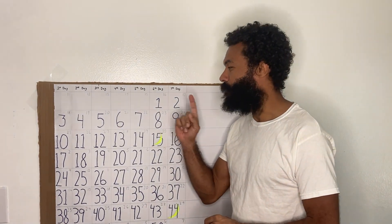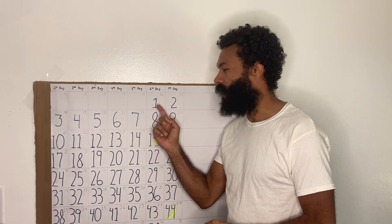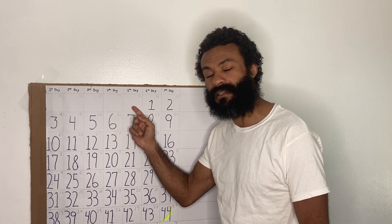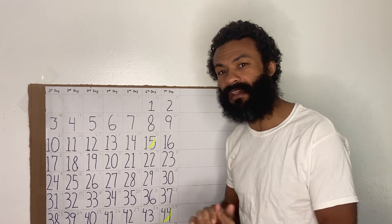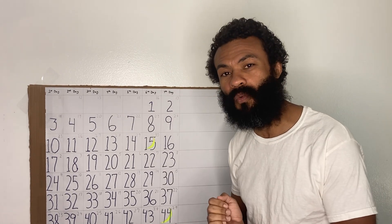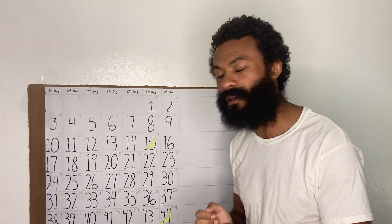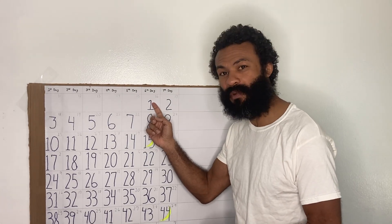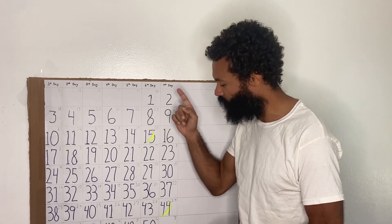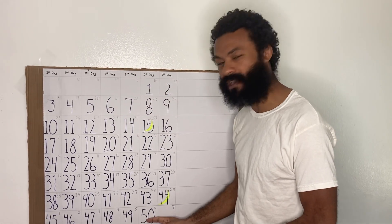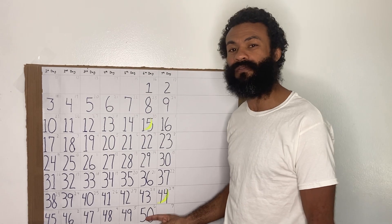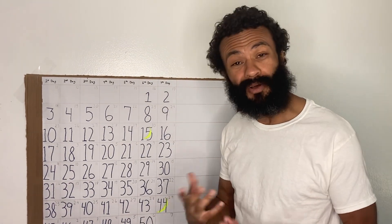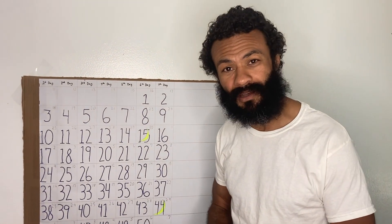We need to find the morrow after the Sabbath — the Sabbath in question being the high Sabbath of day 15, the first month, also the first day of unleavened bread. The morrow after is the 16th. Once we have that day, we just count down 50 days and we will land at the festival of weeks — Shavuot, also known as Pentecost.